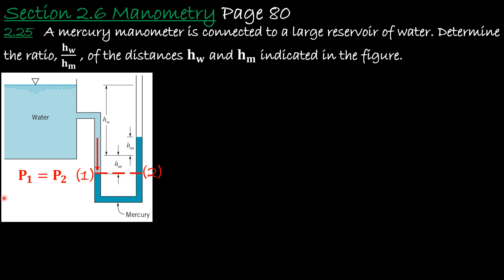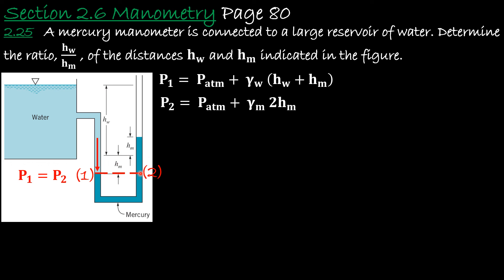Let's find P1 and P2. For P1: starting from the atmosphere at the top of the reservoir, then adding the water column from the surface down to point 1, we get P1 = P_atm + γ_water × (Hw + Hm). For P2: starting from atmospheric pressure on the open mercury side and going down the mercury column of height 2Hm, we get P2 = P_atm + γ_mercury × 2Hm. Setting P1 = P2, the atmospheric pressure terms cancel.